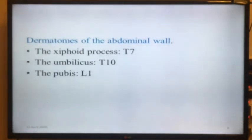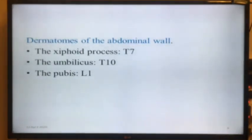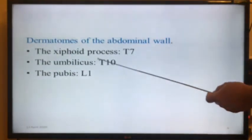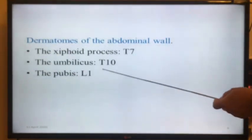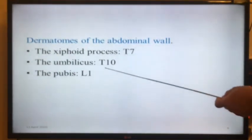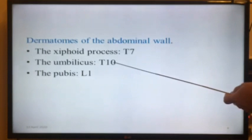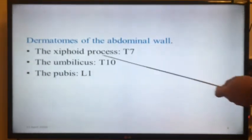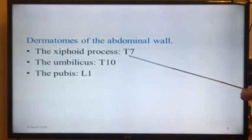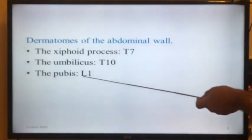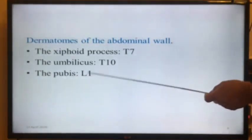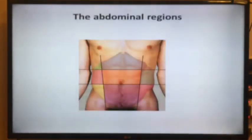I want to remind you about a few points. The umbilicus receives nerve T10 — the thoracic nerve number ten. While the xiphoid process is T7 and the pubic region is L1, that is lumbar nerve number one.